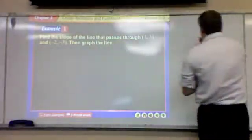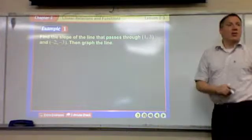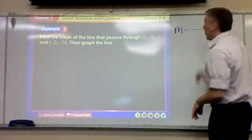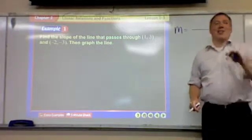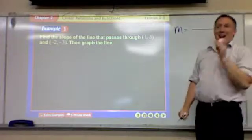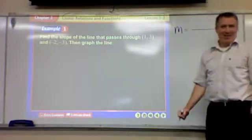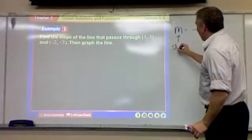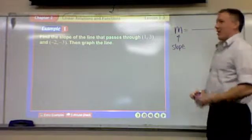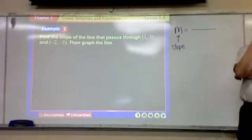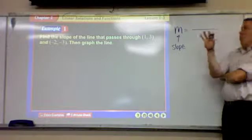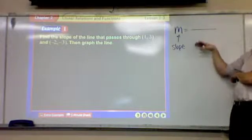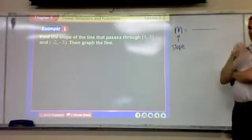So what is the word version? First of all, what letter do we use for slope? M. How do you know this? I like some ideas. Come on. We did this last year, and you did it the year before, and you did it the year before that. I'm not expecting this to be entirely brand new. M. I do not know why we use M. We just do. Just deal with it. M is the letter we use for slope.